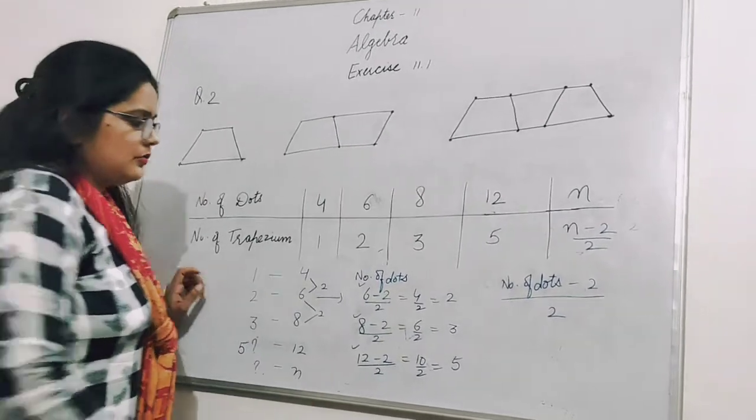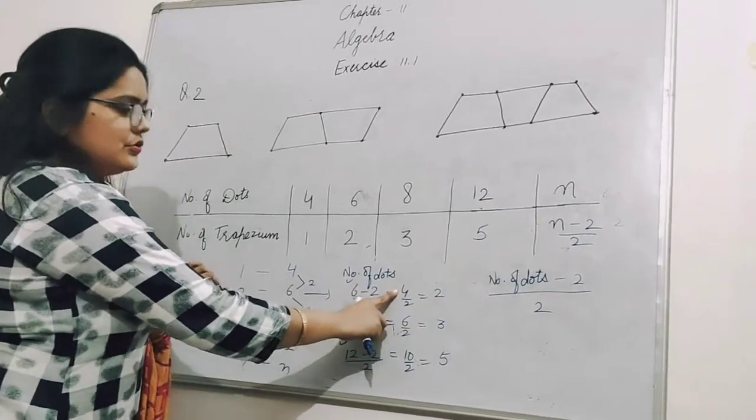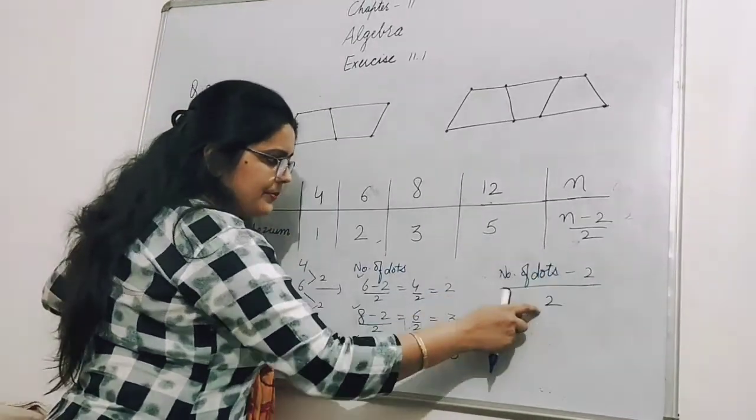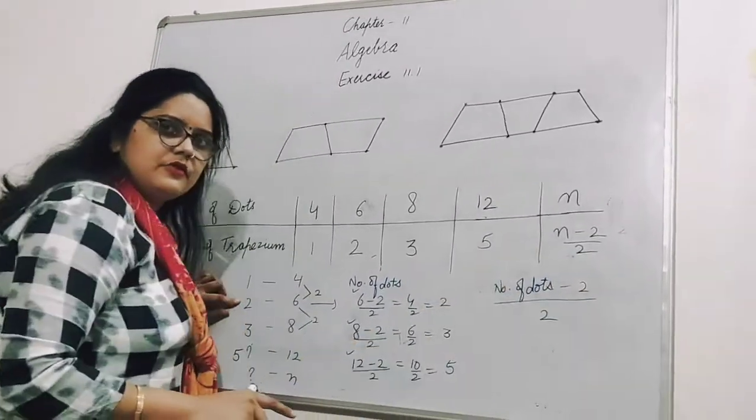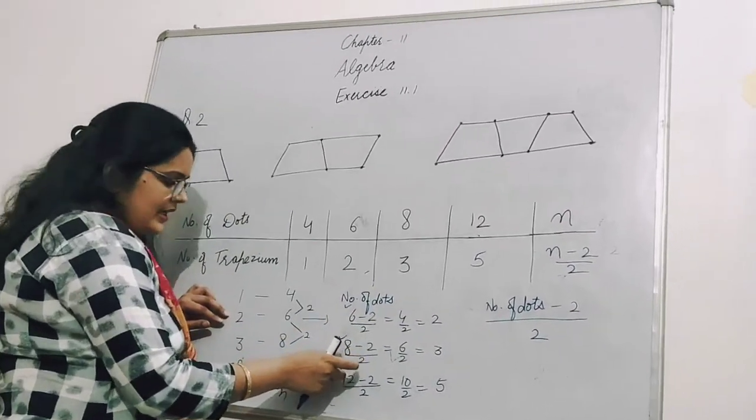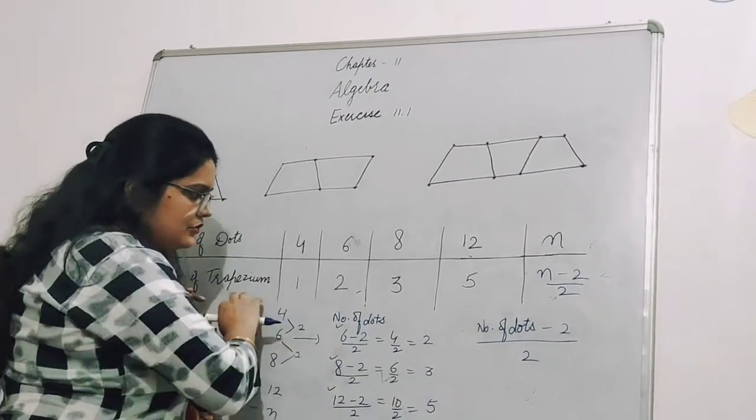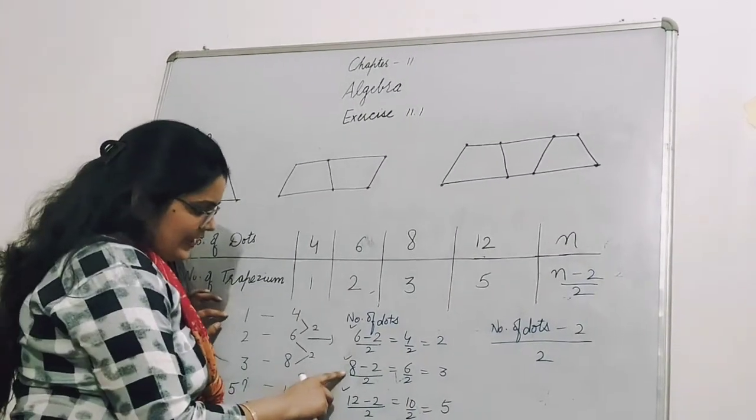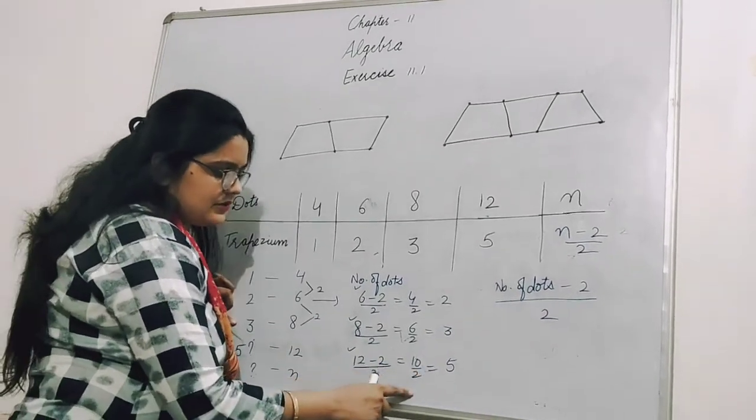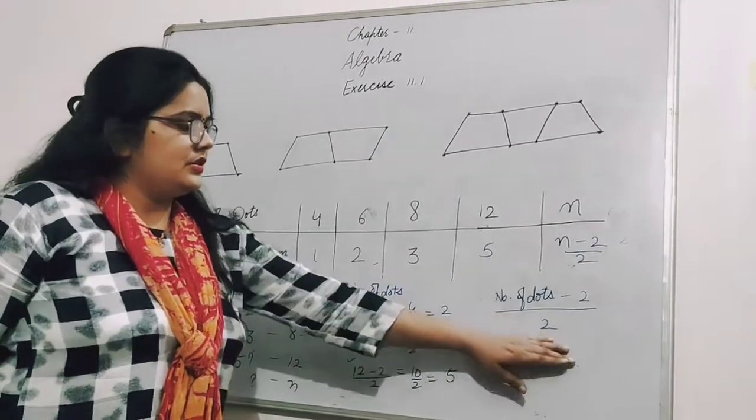If I do 6 minus 2, I get 4, but I need 2. This term we wrote must apply the same to all. If I do 6 minus 4, I get 2, but for 8 minus 4, I get 4, not 3. So I need a combination that satisfies all terms. 8 minus 2 is 6, divided by 2 is 3. 12 minus 2 is 10, divided by 2 is 5. So the formula is: (number of dots - 2) divided by 2.